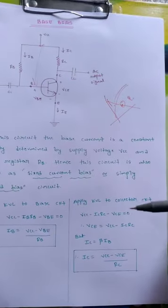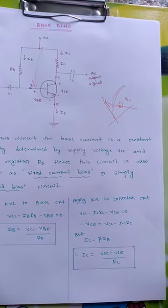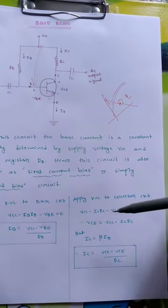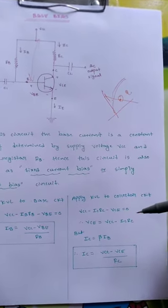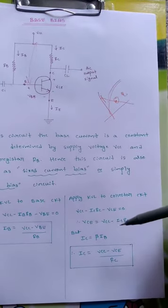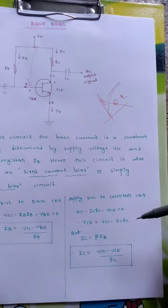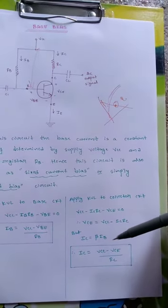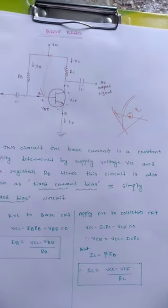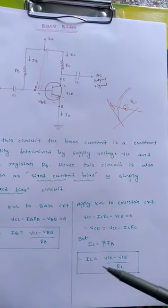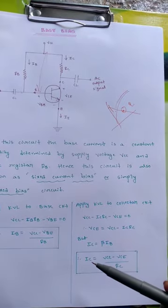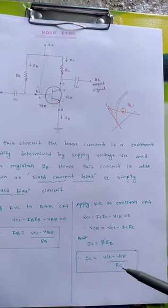Now for the second part, applying KVL to the collector circuit: VCC minus IC into RC minus VCE equals zero. So VCE equals VCC minus IC into RC. Since IC equals beta into IB, we can write IC equals VCC minus VCE divided by RC.